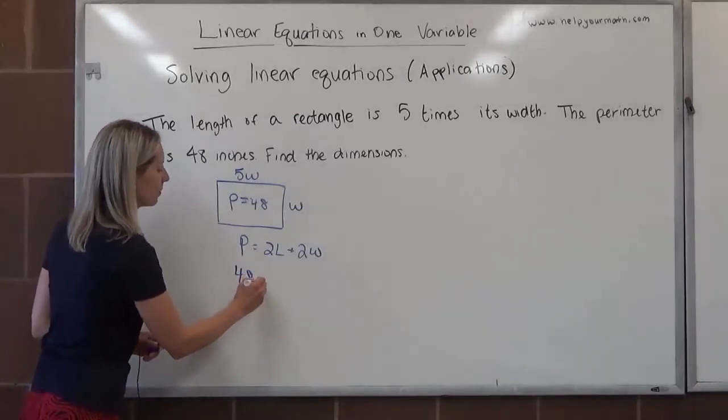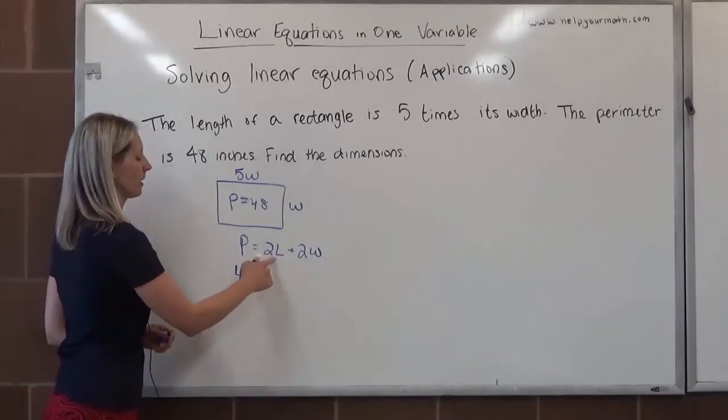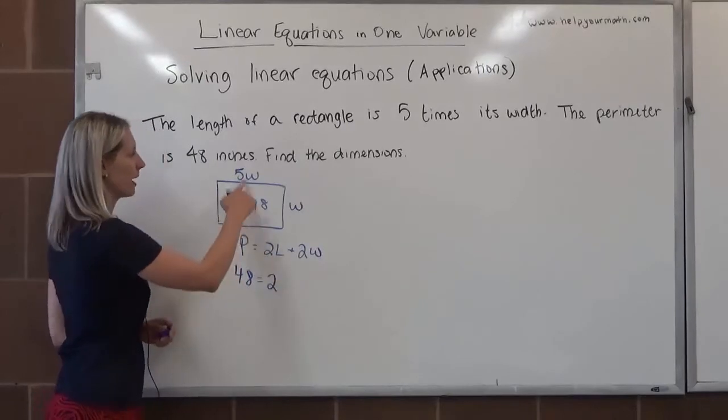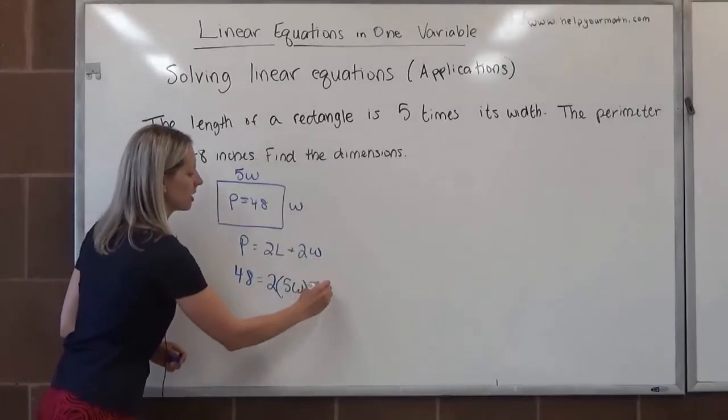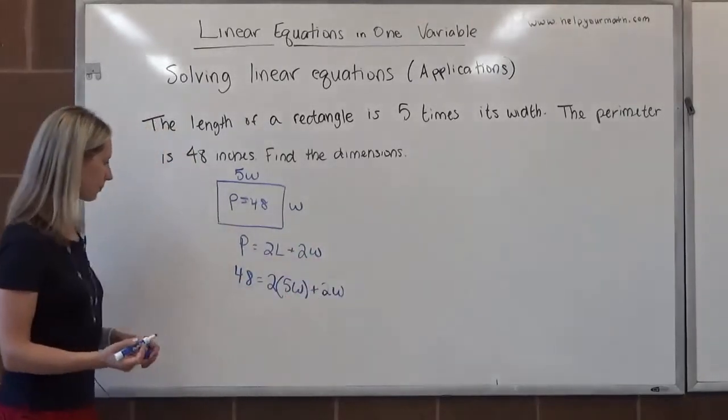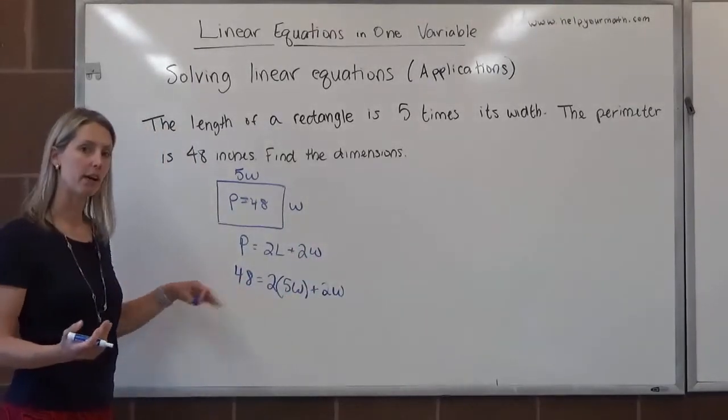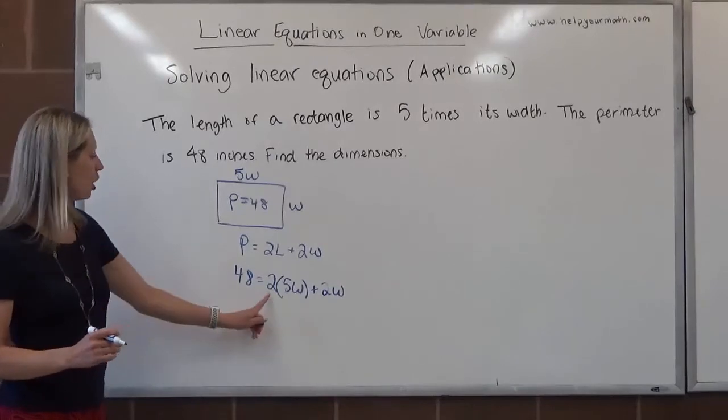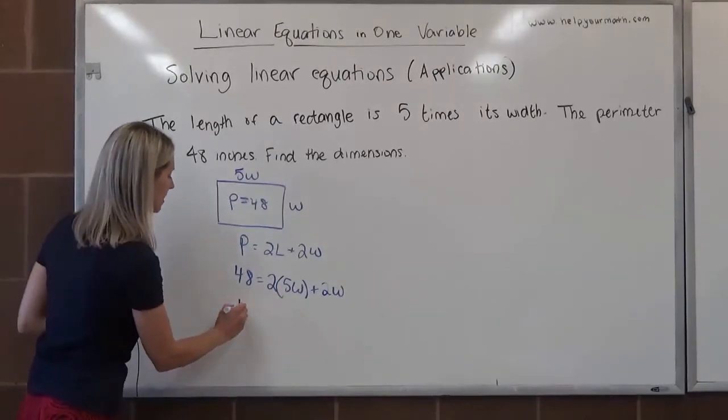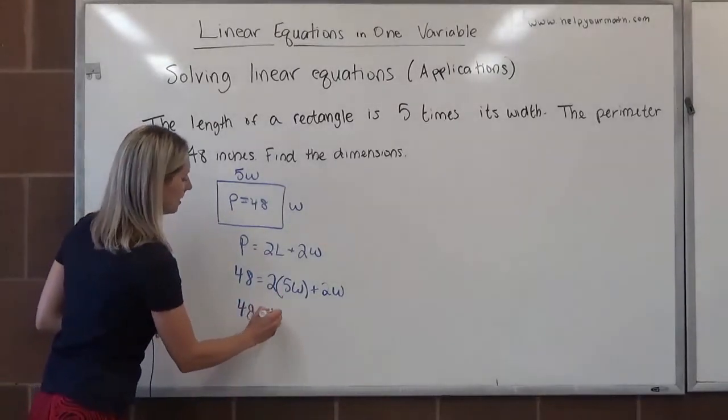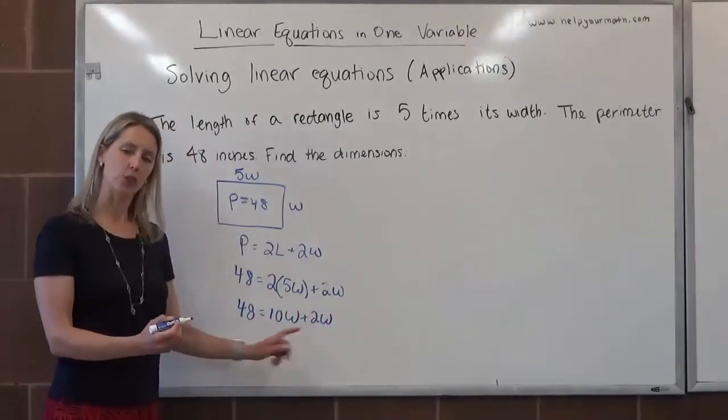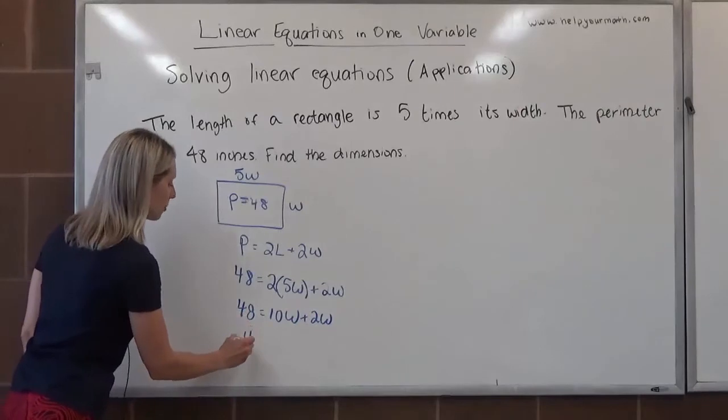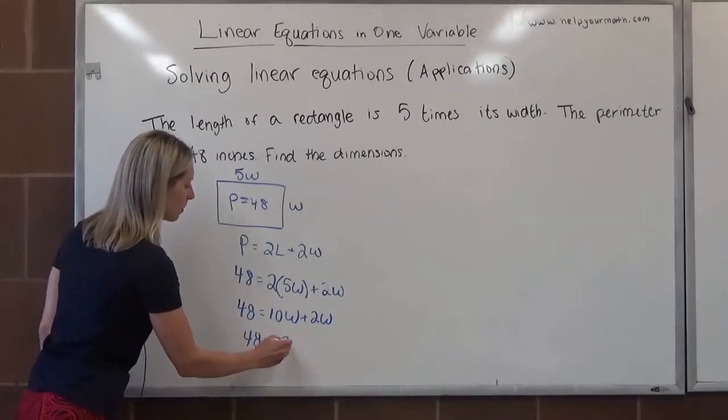We're going to say 48 equals twice the length. So twice the length is 5w plus twice the width, which is just w, so that's going to stay the same. I think we can do this. We have one variable, one equation. Let's solve. 2 times 5w is 10w, so we have 48 equals 10w plus 2w. We can combine like terms, 10w plus 2w is 12w, so we have 48 equals 12w.